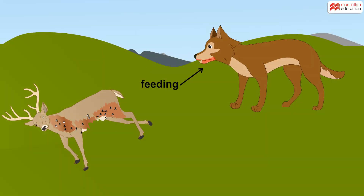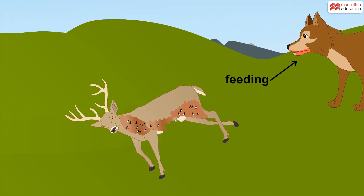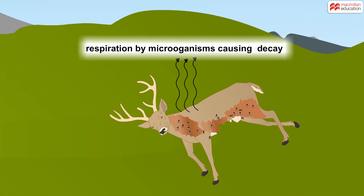The large dog now eats and digests a deer, with a repeat of the processes when the deer ate the plant. On the death of the deer,